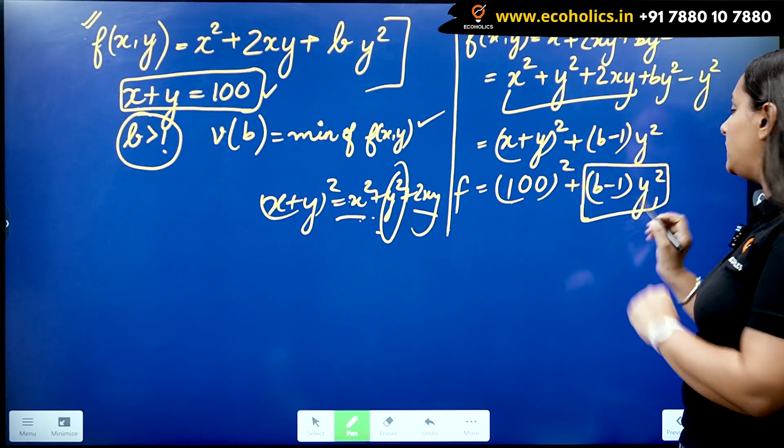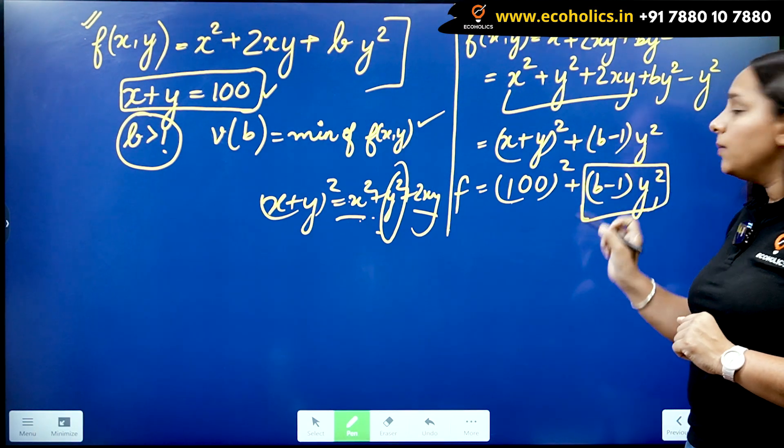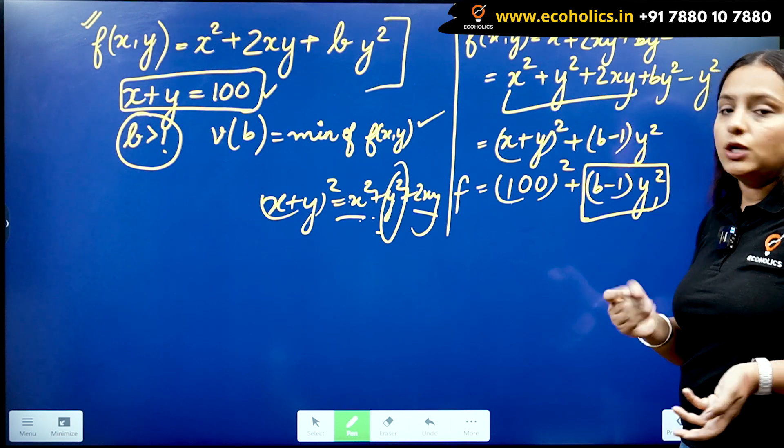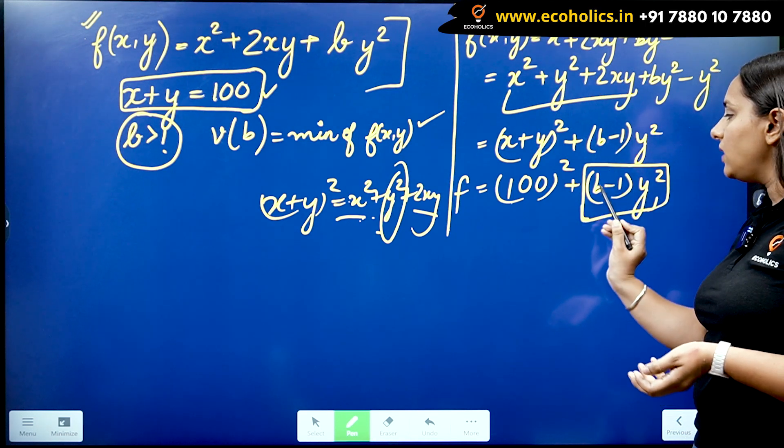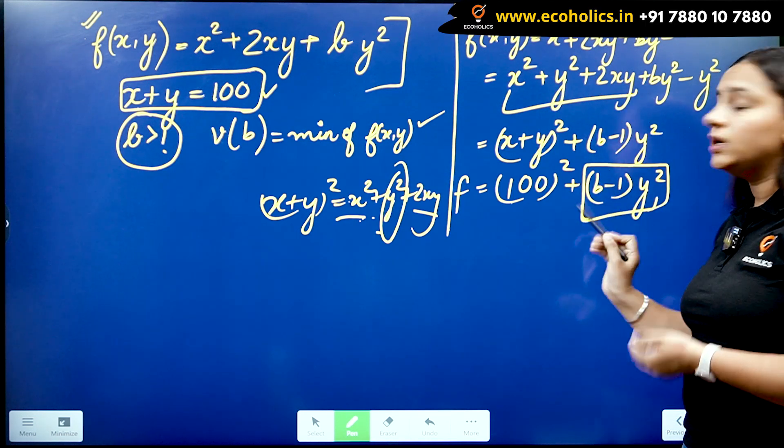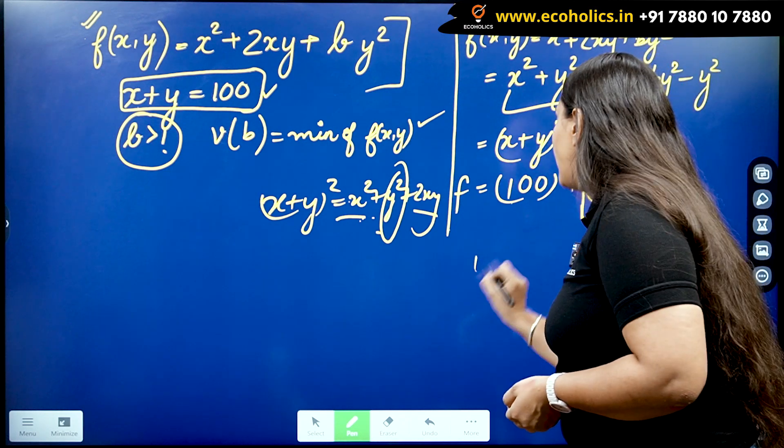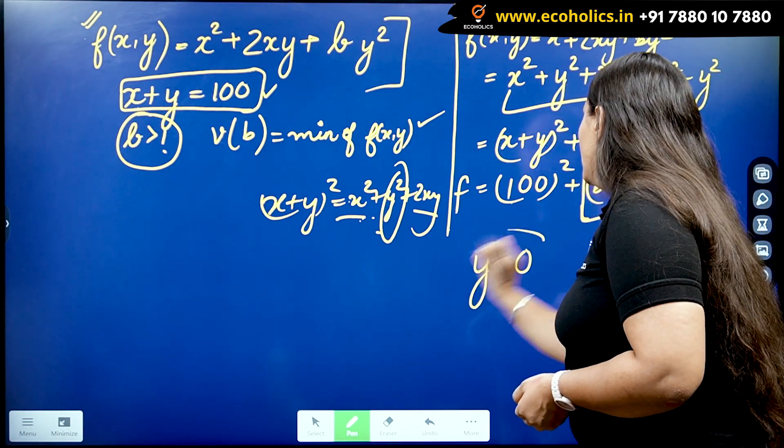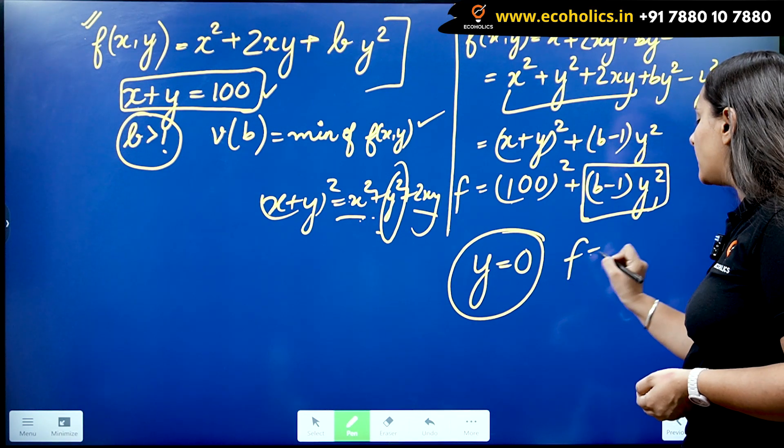So it means if I make this term 0, 100² is going to be the minimum value this function can attain. So this term can be 0 if and only if y² becomes 0, because b cannot be 0, it's always greater than 1. So if it is always greater than 1, I can never have a situation 1 - 1.